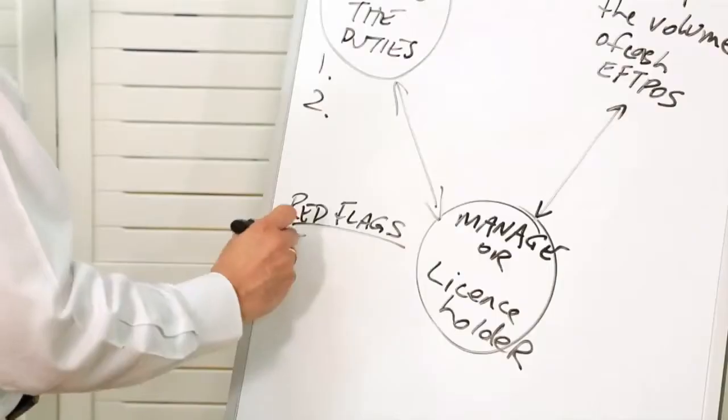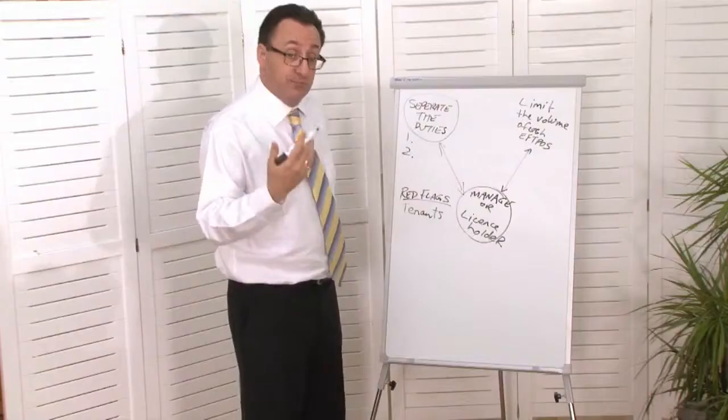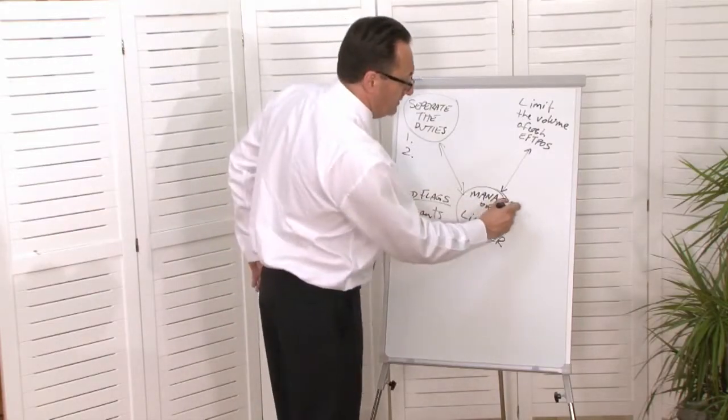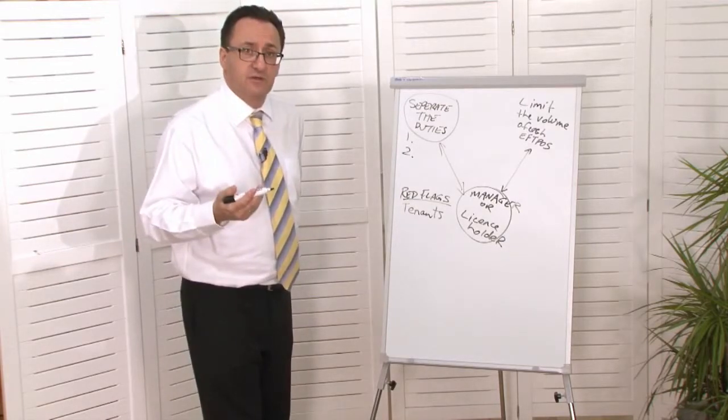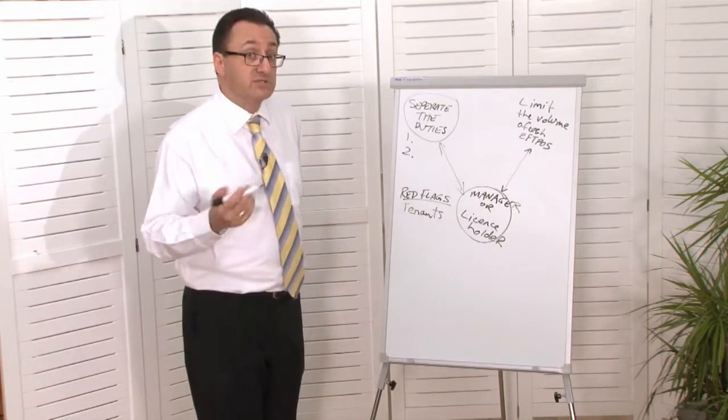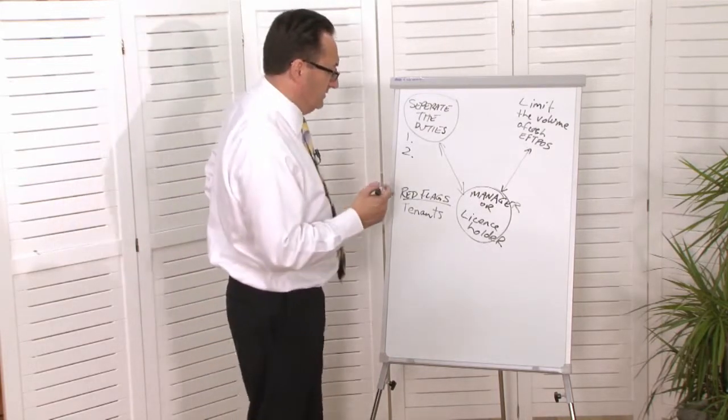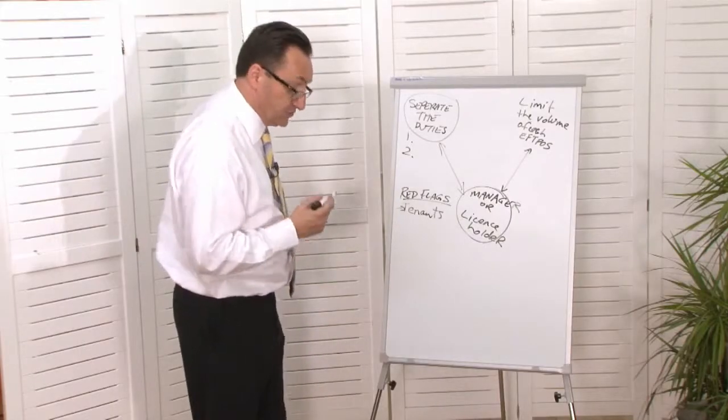For example, you might have a tenant who complains to you, the manager, that they get letters for rent arrears, but they claim they always pay their rent on time. So where is the money going? That could be a red flag. That's just one example.